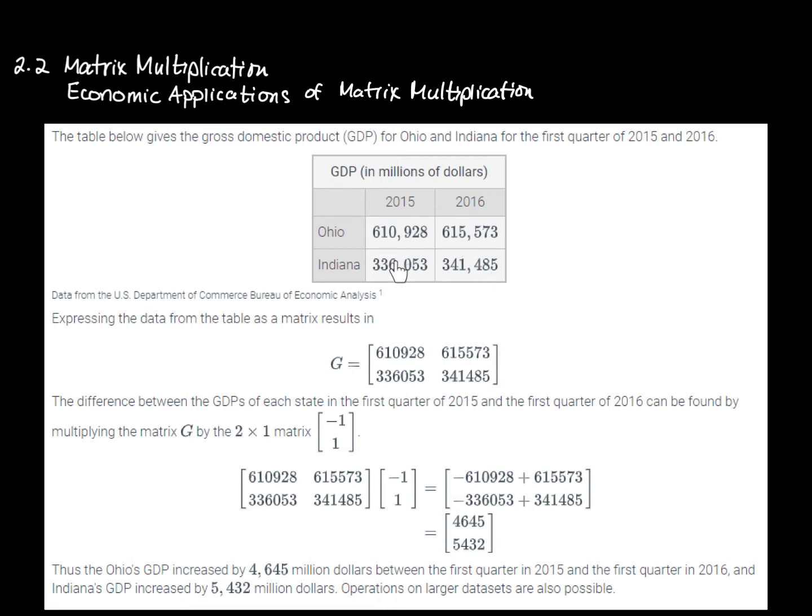The matrix we're working with doesn't have the labels on it, just takes each of those entries and puts it into a similar position in a matrix. Then, by multiplying the matrix G by the matrix [-1, 1]...